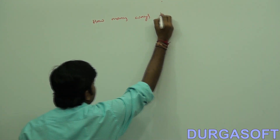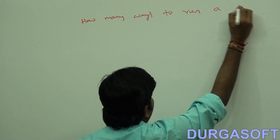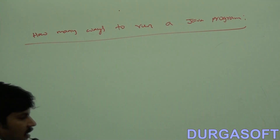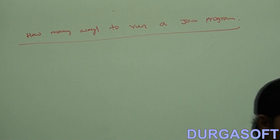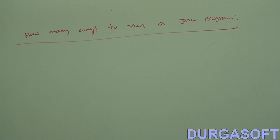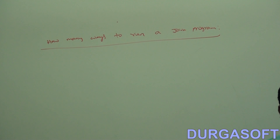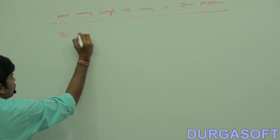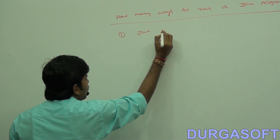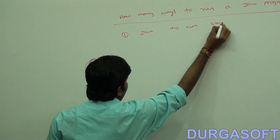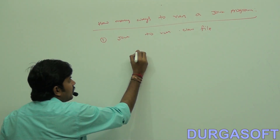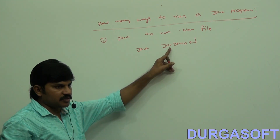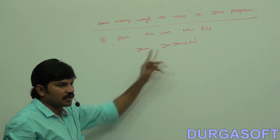How many ways are there to run a Java program? The first way: we can run a .class file with the Java command from the command prompt. For example, 'java JarDemo' — this runs the .class file.